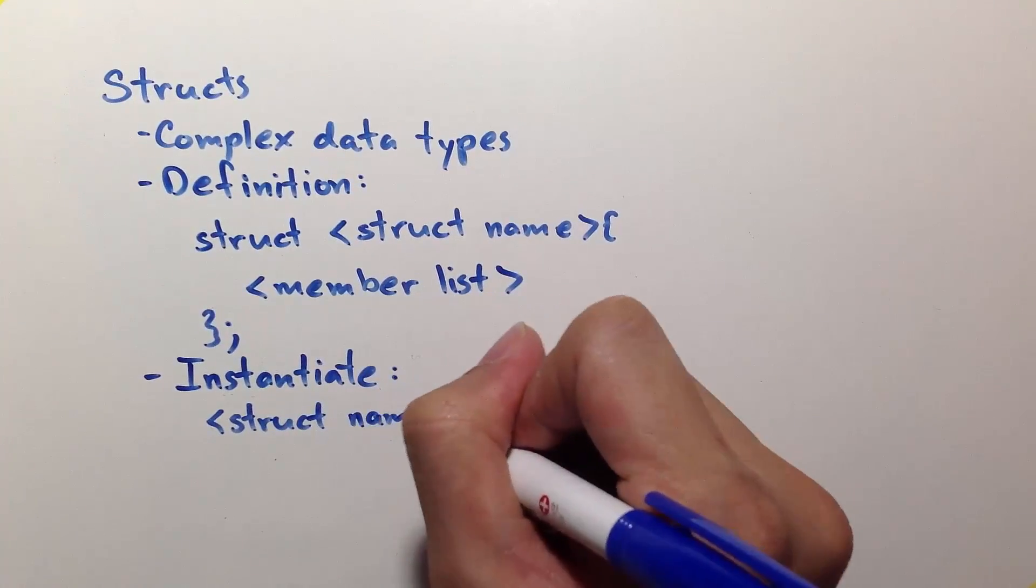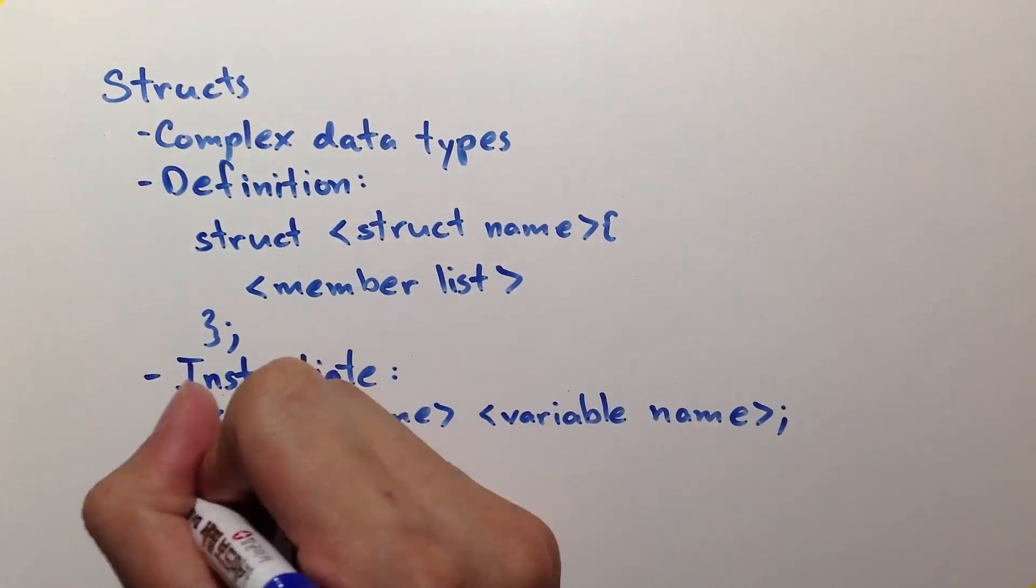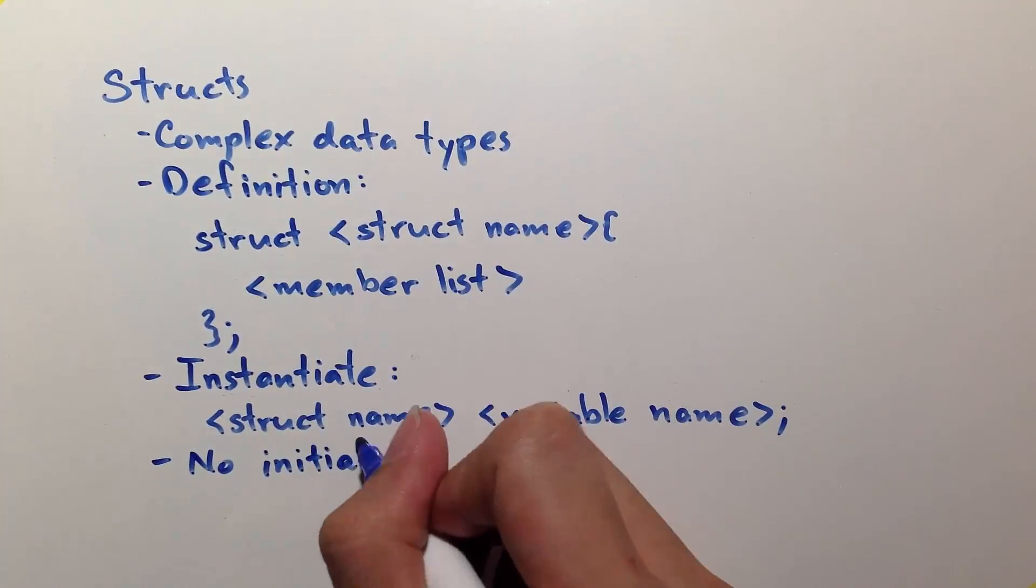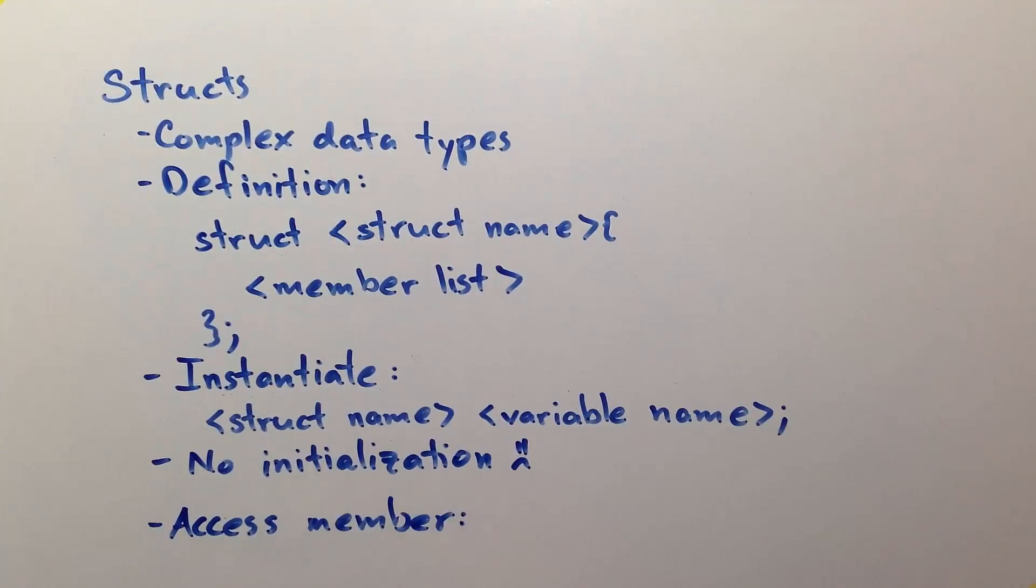We instantiate a structure by struct name followed by the variable name, semicolon. Unfortunately, unlike your normal variables or arrays, structures cannot be initialized. To access a member of the structure, you refer to the instance, the variable name, dot, and the member name.